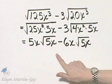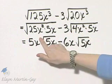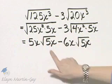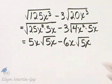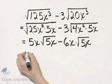These now are like radicals because the index here is the same as this index, and the radicand is the same as this radicand.